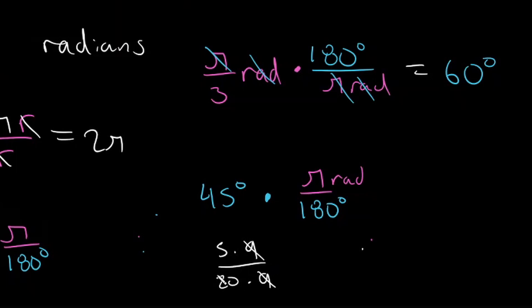And we can divide both of those by 5, and we'll be left with 1 fourth. So this is going to be 1 fourth times pi, which is just equal to pi over 4.